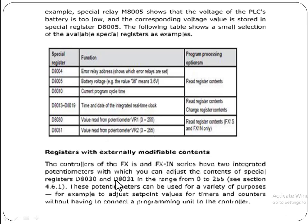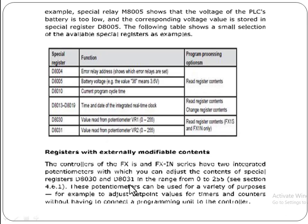Controllers of the FX family in the FX1N series have two integrated potentiometers with which you can adjust the content of the special registers D8030 and D8031 in the range from 0 to 255. These potentiometers can be used for a variety of purposes, for example to adjust the setpoint values for timers and counters without needing to connect a programming unit to the controller. Their values are stored in special registers D8030 and D8031.